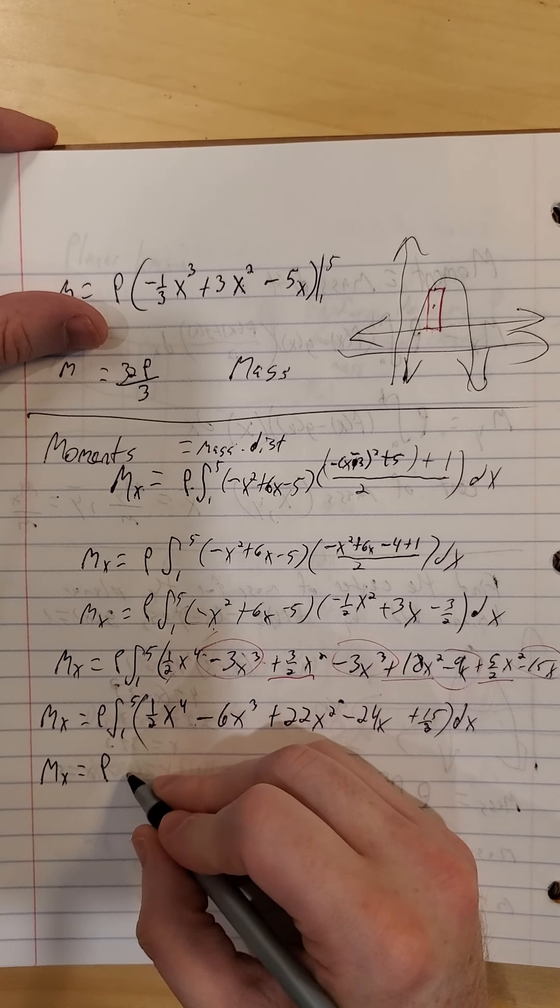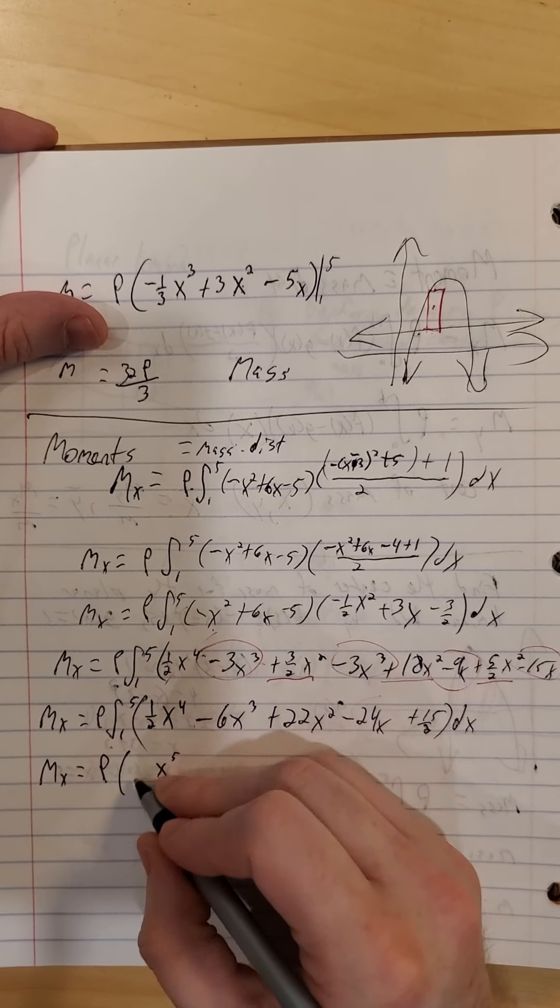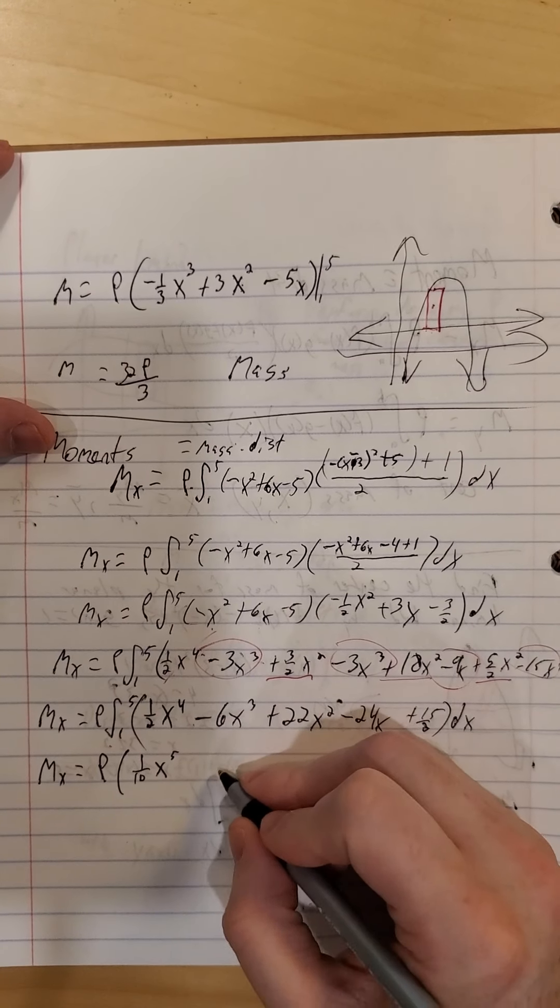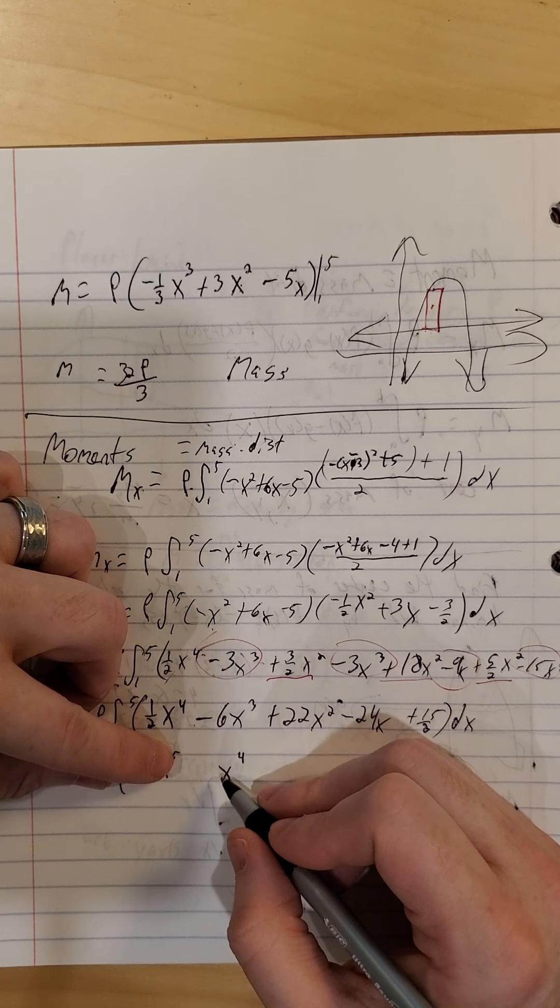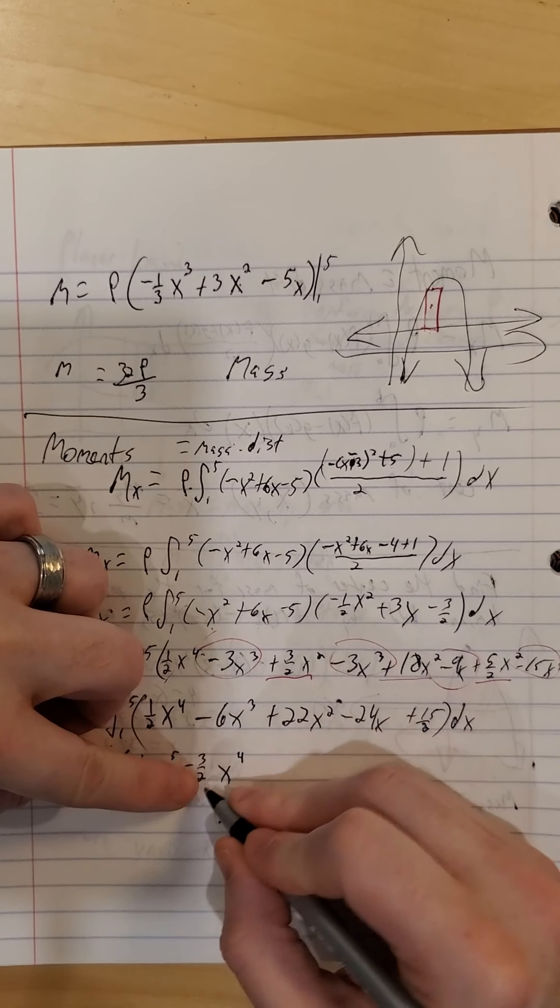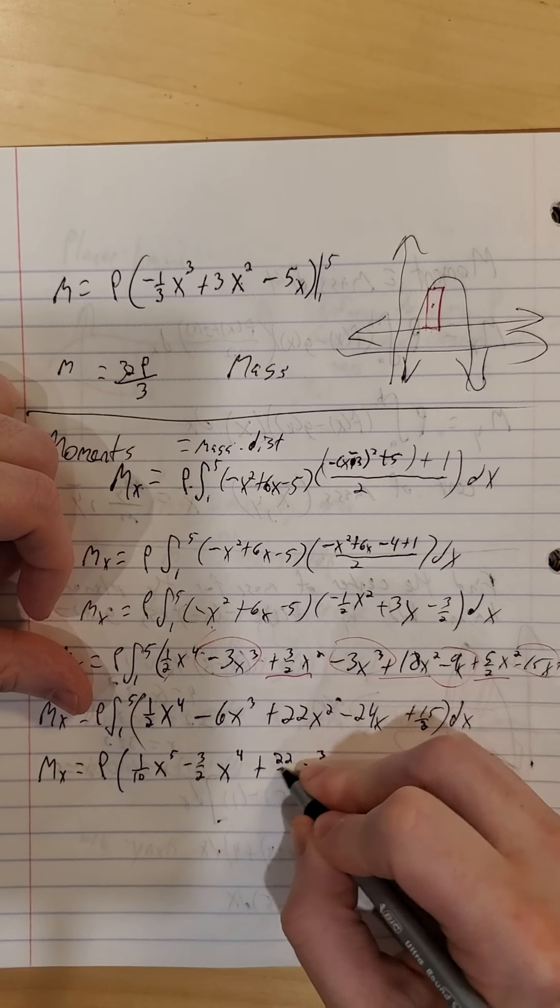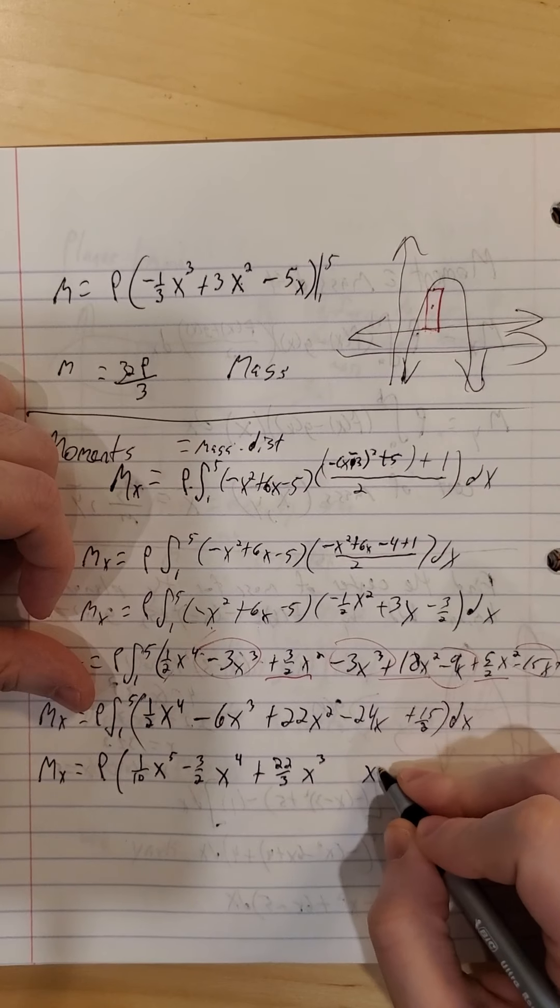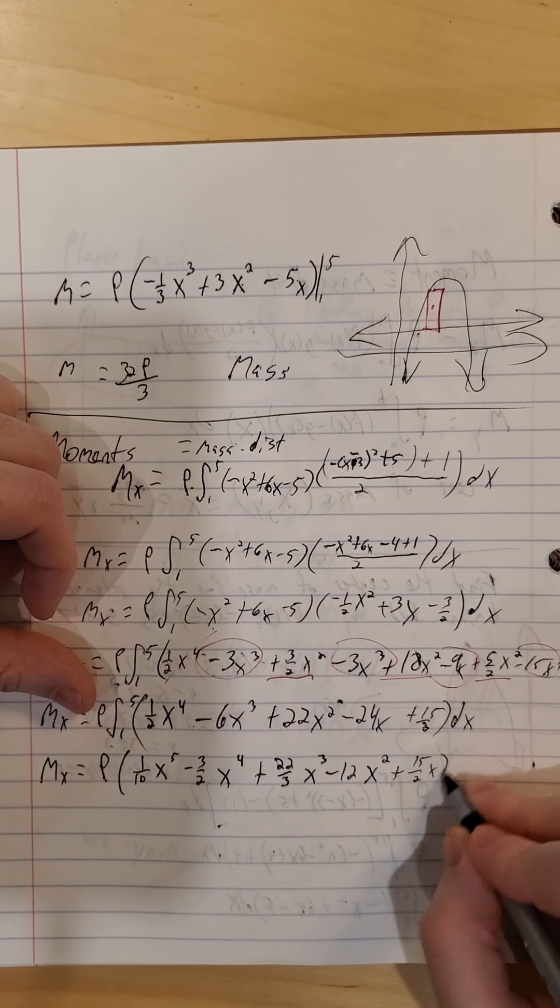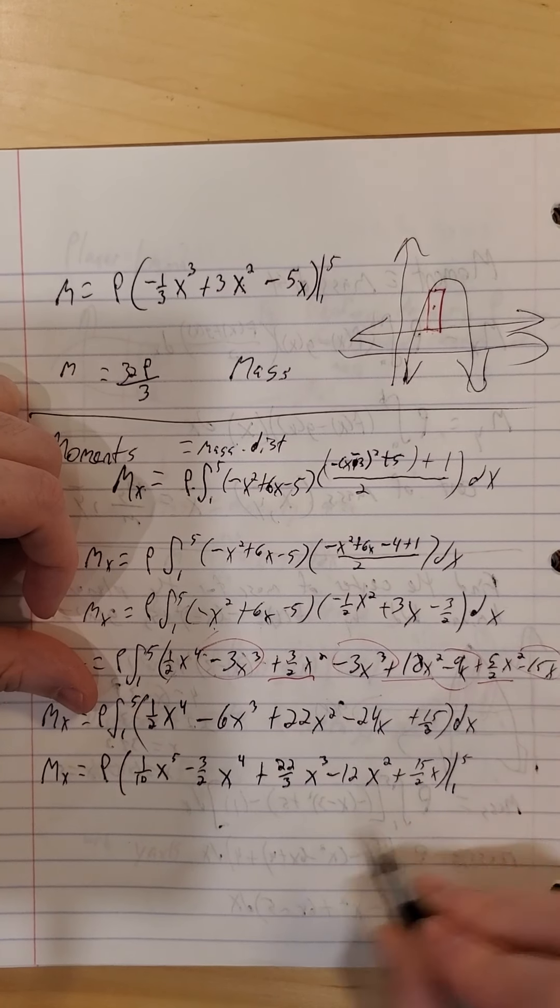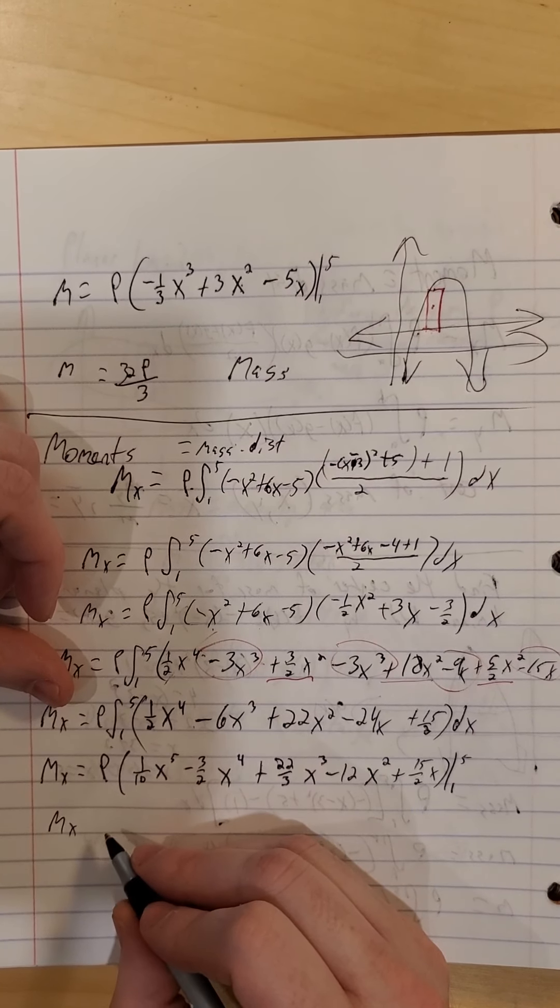So, a moment about x, row times, now we integrate. x to the 4th is now x to the 5th. I had a 1 half, I also need a 1 fifth, so 1 tenth. x to the 3rd becomes x to the 4th. We want to end up with a negative 6 there, so we have a negative 3 halves here. 4 halves is 2, 2 by 3 is 6. x squared becomes x cubed. I want a 22 as a coefficient at the end, so 22 thirds. x to the 1st becomes x squared, so that makes this guy a negative 12 to get there. And the anti-derivative of a constant is the 1st power, and then we evaluate from 1 to 5. So, a moment about x, we end up at 416 row over 15.